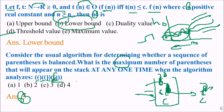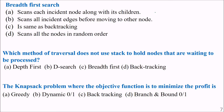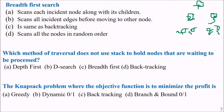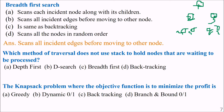BFS — breadth-first search — works level by level: first we traverse one level, then we go to levels two and three, then four, five, six, and so on. The answer is that BFS scans all incident edges before moving to another node — it uses queues, not a stack, to hold nodes waiting to be processed.